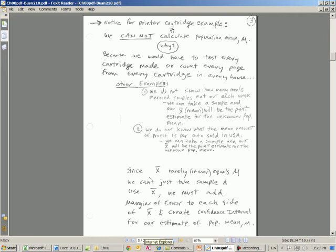This analysis assumes that the original population distribution is normal or bell shaped or near normal. If it's not, then as long as you have a big enough n from the central limit theorem, then about 95 intervals would have the population mean and 5 would not. Let's notice something for the printer cartridge example. We cannot calculate population mean. Why? Because we can't possibly test every cartridge made or count every page for every cartridge in every house. Other examples, we do not know how many meals married couples eat out each week. We do not know what the mean amount of profit is per auto sold in the US.